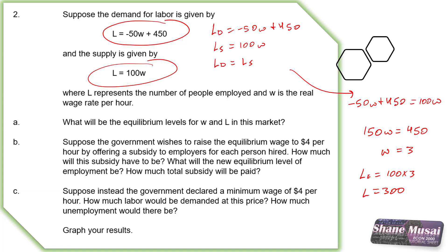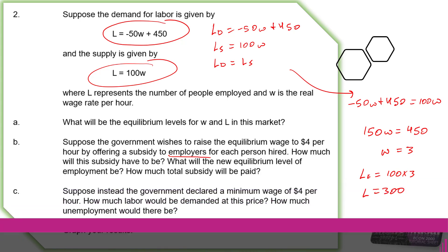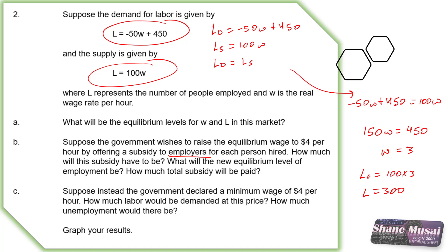Part B says: suppose the government wishes to raise the equilibrium wage to $4 per hour by offering a subsidy to employers. This part is important — the subsidy is being paid to employers so that they can afford to pay workers $4 per hour. How much will this subsidy have to be, what will the new equilibrium level of employment be, and how much total subsidy will be paid? The demand for labor represents the employers — the firms and companies in the market — and the supply of labor is given by the workers, the employees.